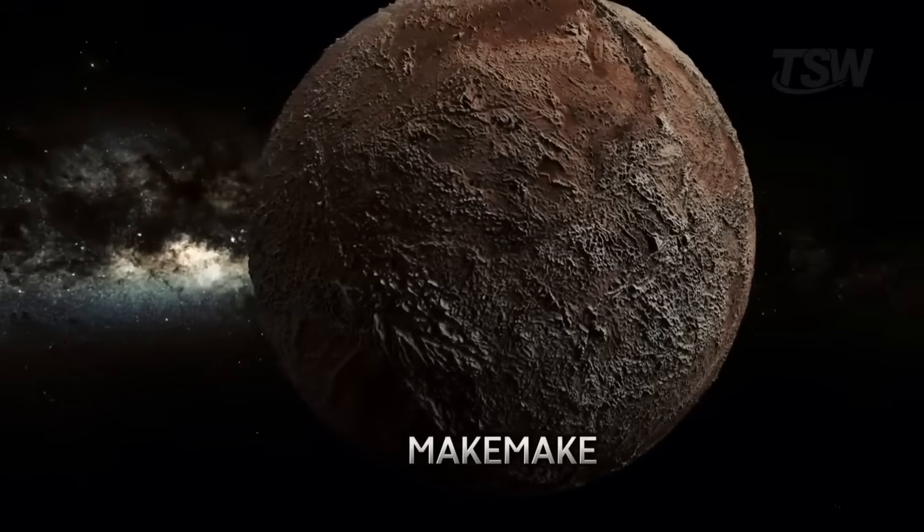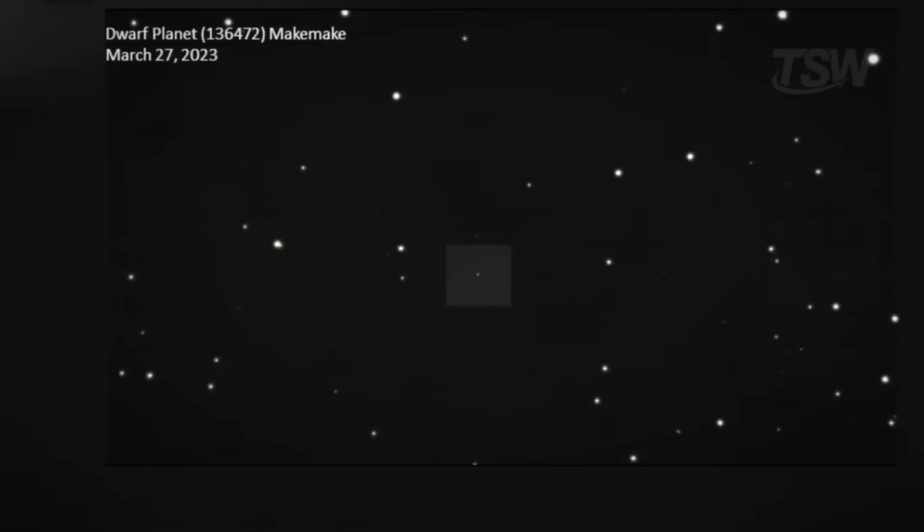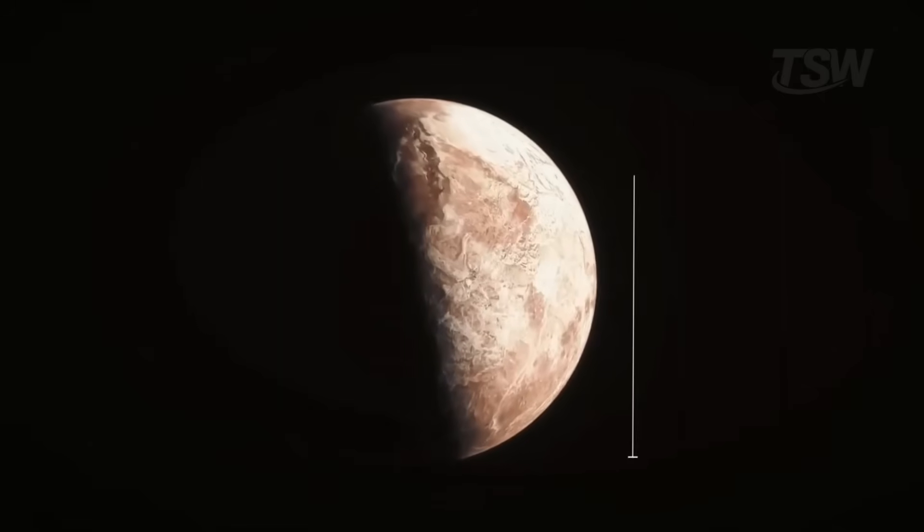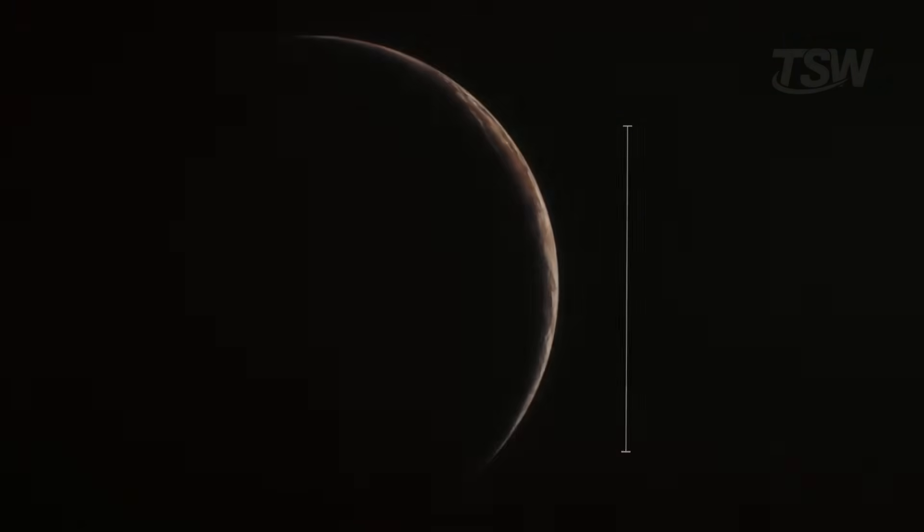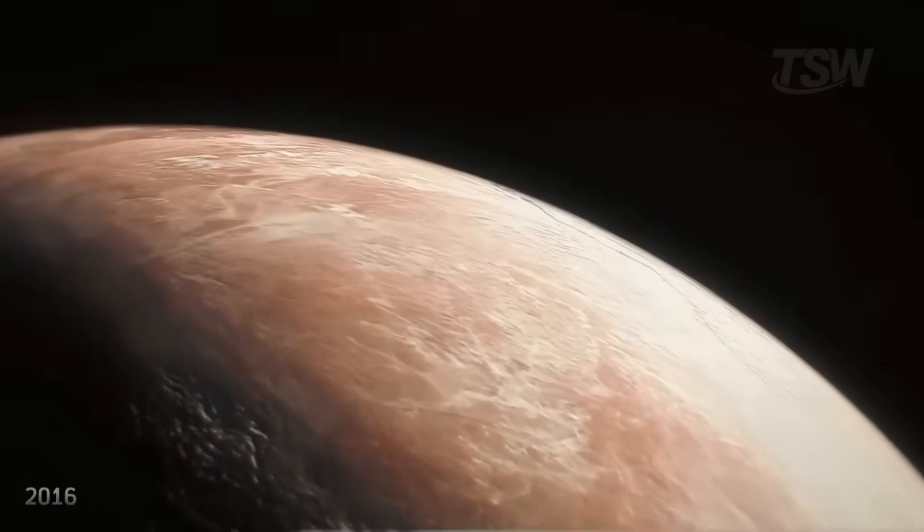Another fascinating dwarf planet is Makemake, detected in 2005. It's the second brightest object in the Kuiper Belt, behind only Pluto. With a diameter of nearly 1,500 kilometers, Makemake has a surface covered in methane ice and takes about 305 years to orbit the Sun.